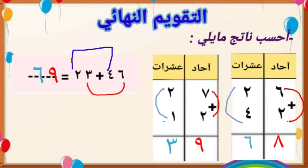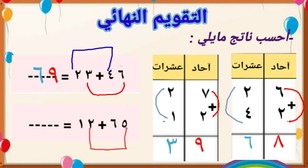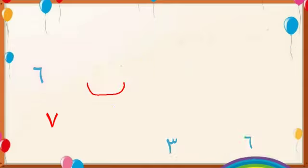التدريب الرابع: خمسة وستون زائد اثنا عشر. خمسة زائد اثنان يساوي سبعة، وستة زائد واحد يساوي سبعة. الناتج: سبعة وسبعون. أحسنتم. ماذا نسمي هذا الجمع؟ الجمع الأفقي، ممتاز.